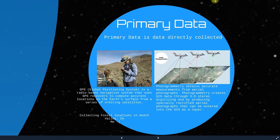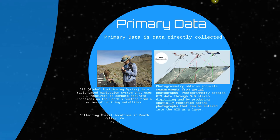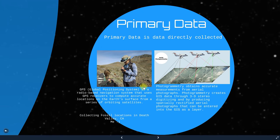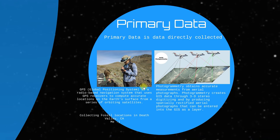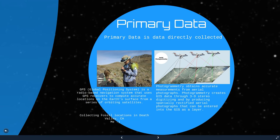The primary data is data directly collected. First, GPS — the Global Positioning System — is a radio-based navigation system that uses GPS receivers to compute accurate locations on the Earth's surface from a series of orbiting satellites. We also have GPS in our smartphones. For example, collecting fossil locations in Death Valley, CA.